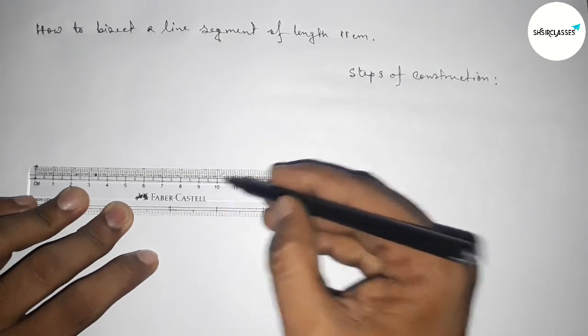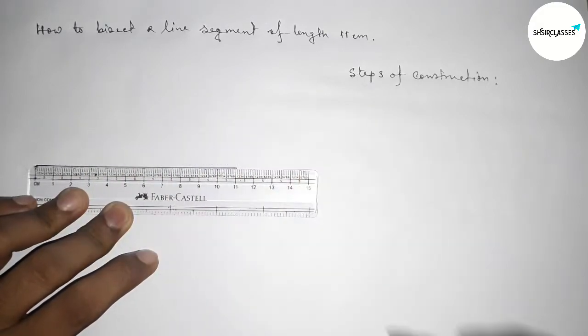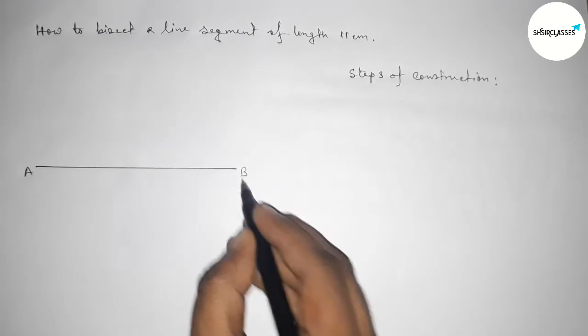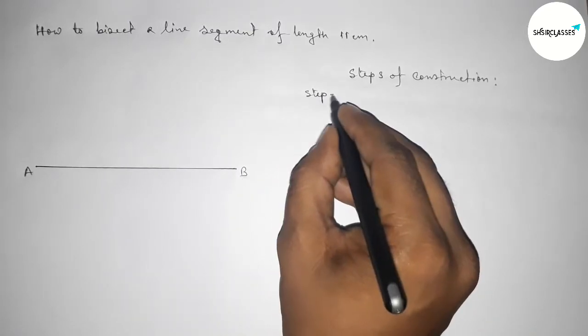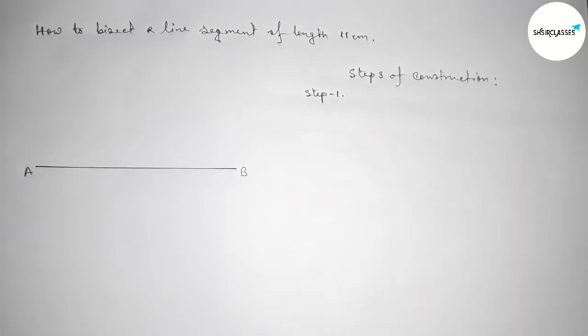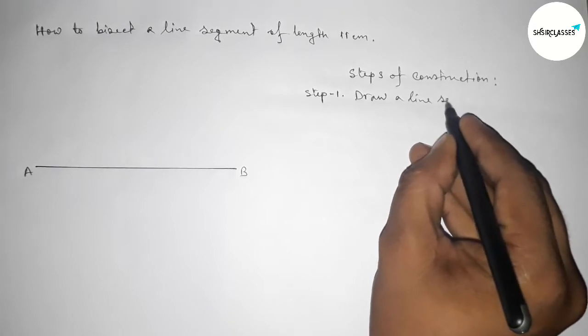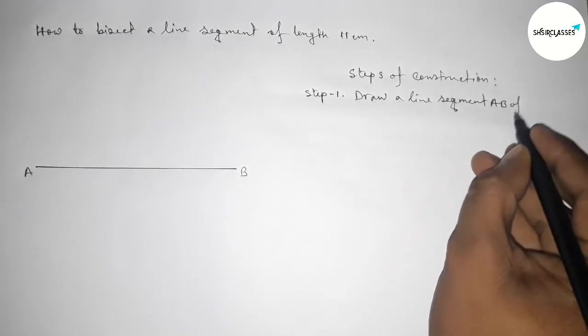Now taking here point A and here B. So now step number one: in step one we have to first draw here a line segment AB of length 11 centimeter by using scale.